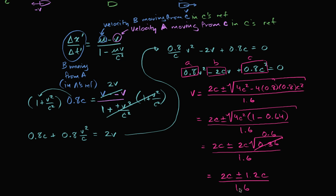We've got two possible values for v. If we take the plus, we get 3.2c divided by 1.6, which is a velocity greater than the speed of light — so we can rule that out. So the answer has to be the negative version: 2c minus 1.2c over 1.6, which equals 0.8c over 1.6. Since 0.8 is half of 1.6, this is 0.5c.